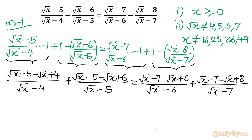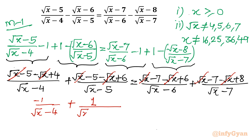Now we can cancel whatever we can. The √x terms cancel — plus √x minus √x, plus √x minus √x. What is left is −1 over (√x − 4), plus 1 over (√x − 5), equal to −1 over (√x − 6), plus 1 over (√x − 7).